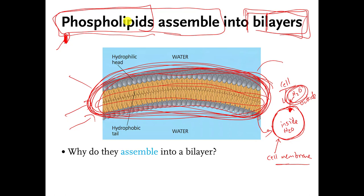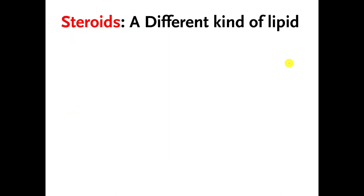So to summarize: phospholipids have two tails, triglycerides have three tails, fatty acids have one tail. The last kind of lipid molecule I'm going to talk about is a steroid. You've probably heard of steroids before — this is a different kind of lipid and they don't necessarily have to have tails.